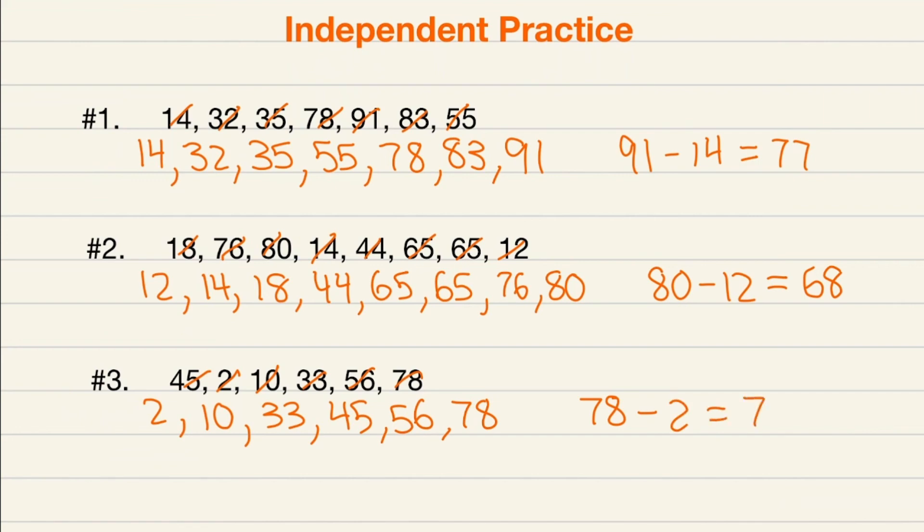So hopefully you went three for three in the independent practice. Again, I encourage you to take your time. Even if it's finding the simplest thing like range, I don't want you to make a mistake on a quiz on one of the easiest concepts, especially range. Take your time, order your numbers from least to greatest, and guarantee that you pick the largest number and the smallest number. And with that being said, I'll see you in the next video.